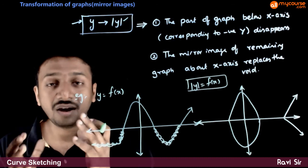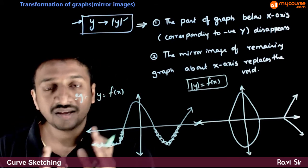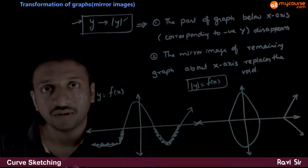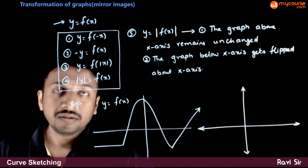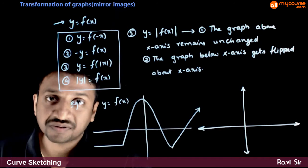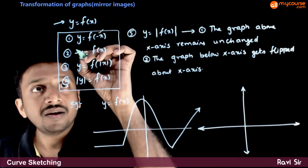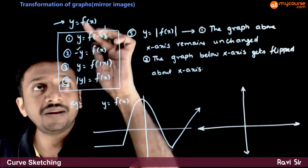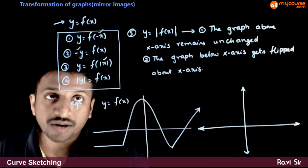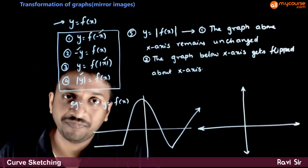So we have understood how x becoming |x| works and y becoming |y| works. We have looked at these four transformations: x replaced by -x, y replaced by -y, x replaced by |x|, and y replaced by |y|.